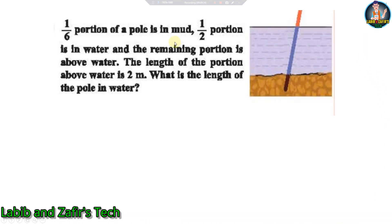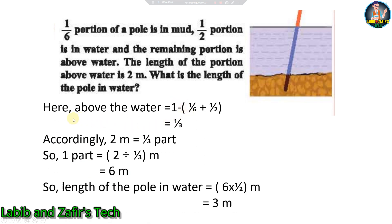Next problem: One sixth of a pole is in mud, one half is in water, and the remaining portion is above water at 2 meters. What is the length of the pole in water? Solution: Portion above water = 1 − (1/6 + 1/2) = 1/3. Since 1/3 of the pole = 2 meters, the full pole = 2 ÷ (1/3) = 6 meters. Length in water = 6 × 1/2 = 3 meters.